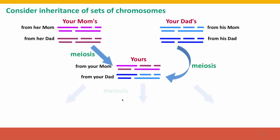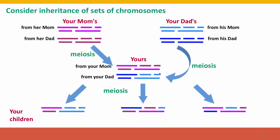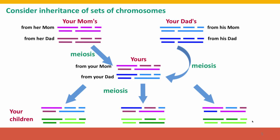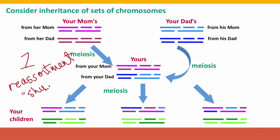When you go on to reproduce, your gametes contain new combinations of the two sets you inherited, because these two sets are mixed together in your cells and your body doesn't keep track of the source. So your children inherit new combinations of the chromosomes you got from all four of your grandparents, and they'll get another complete set — different combinations of chromosomes that your partner got from their grandparents. This whole process is called reassortment, often called shuffling, because it's like shuffling the cards in a deck.